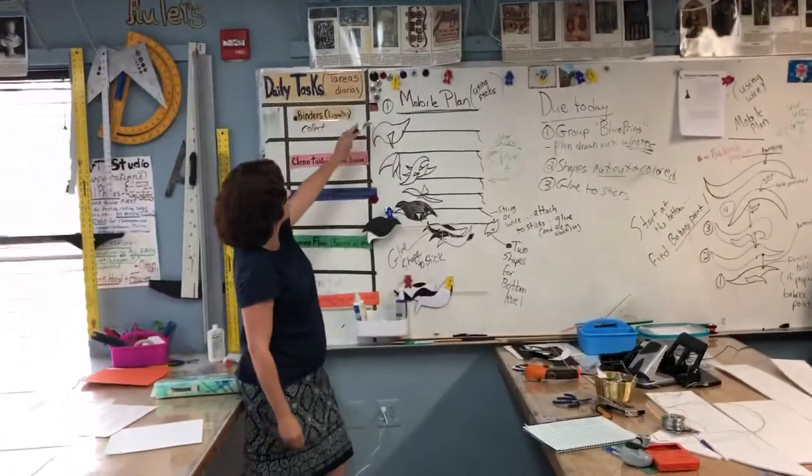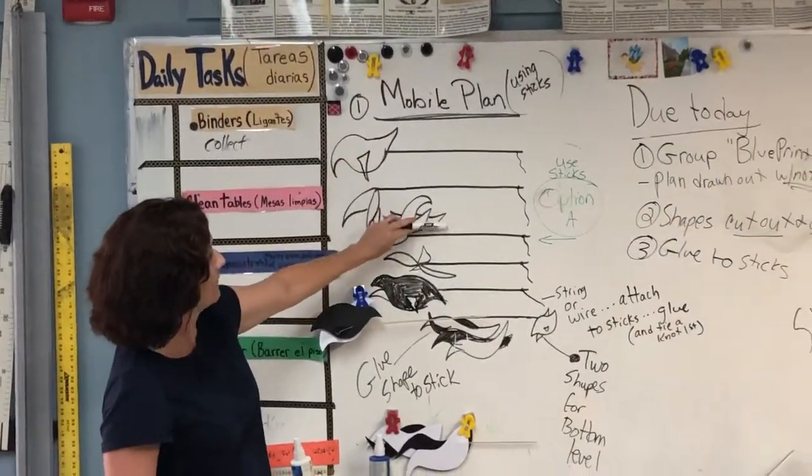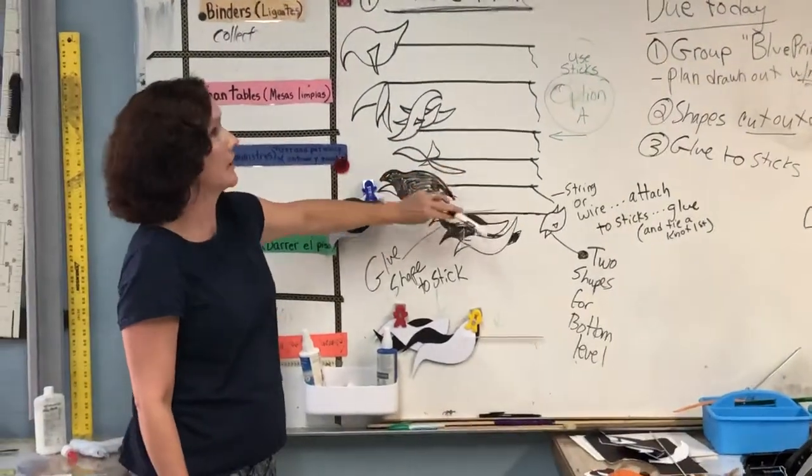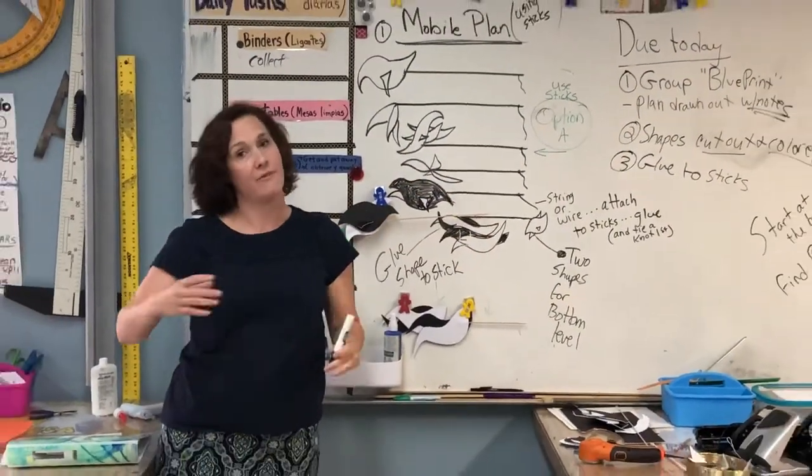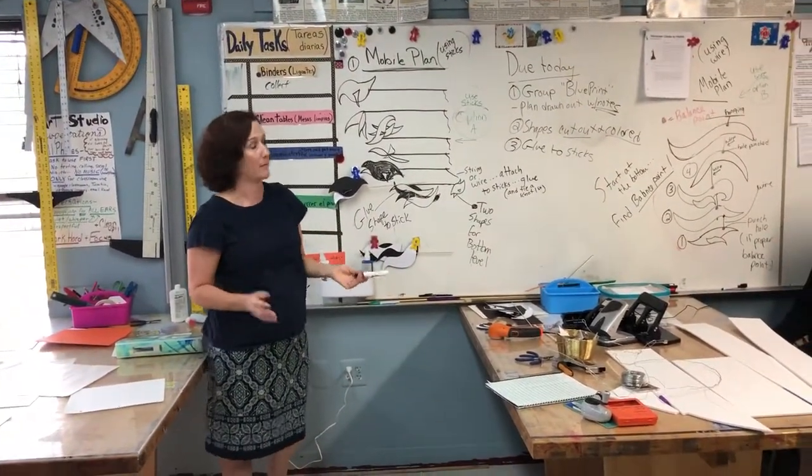So, you have two options. You have option one, which is using sticks to create the levels. You can see here I have one, two, three, four, five, six levels. That's probably an appropriate sculpture. Maybe you have five, maybe four, maybe you do eight. That's up to your group's plan and what you get accomplished.